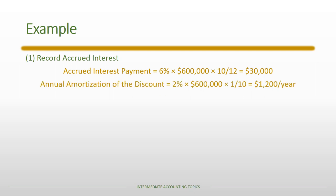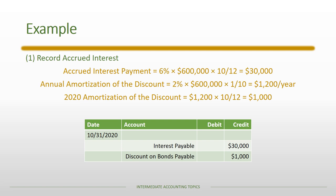We also have to record amortization of the discount. The total discount was two percent of the par value. Each year we amortize one-tenth of that because it's a 10-year bond. The total discount is $12,000 amortized over ten years, which is $1,200 per year. In 2020 it's only a partial year, so we amortize ten-twelfths of the annual amount for a total of $1,000. So we have accrued interest payable of $30,000, a credit to discount on bonds payable of $1,000, and interest expense of $31,000 for the first ten months of 2020.